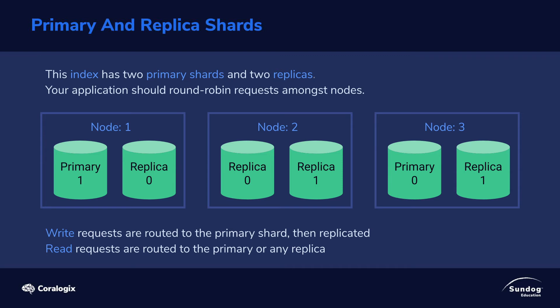There are some things to note here. First, it's a good idea to have an odd number of nodes for this sort of resiliency. Also, the idea is that you would round robin your requests as an application among all the different nodes in your cluster to spread out the load. Maybe your application manages distributing those requests across different nodes, or maybe you have some sort of load balancer device that does that for you.